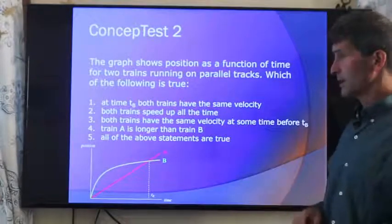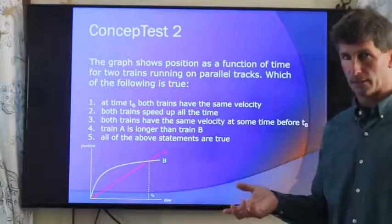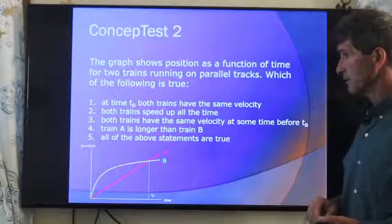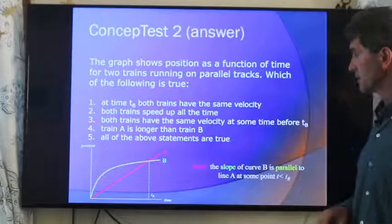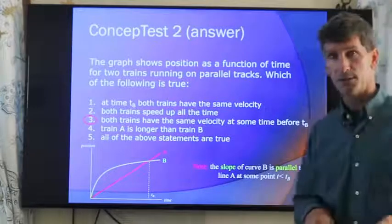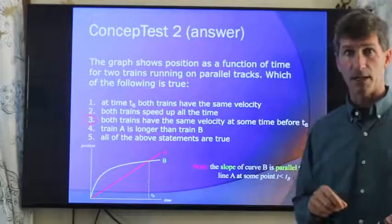Train A is longer than train B. We have no way of knowing that. All of the above statements are true. No. So, both trains have the same velocity because at some point they have the same instantaneous slope.